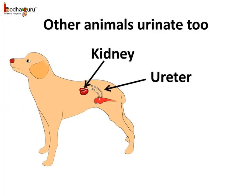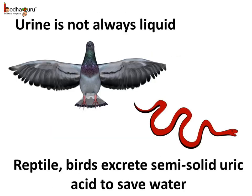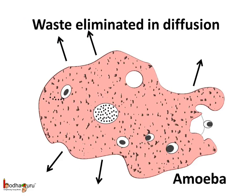Not only humans, other animals too eliminate waste through urine. You must have seen other animals urinating, like the dog, cat, cow, etc. Aquatic animals eliminate waste as gas, like ammonia, which gets dissolved into the water. Lizards and snakes excrete a semi-solid white colored substance — uric acid — to save water. Microscopic organisms like amoeba and bacteria don't have a developed excretory system, so these animals just eliminate waste from the cell directly through the diffusion process.